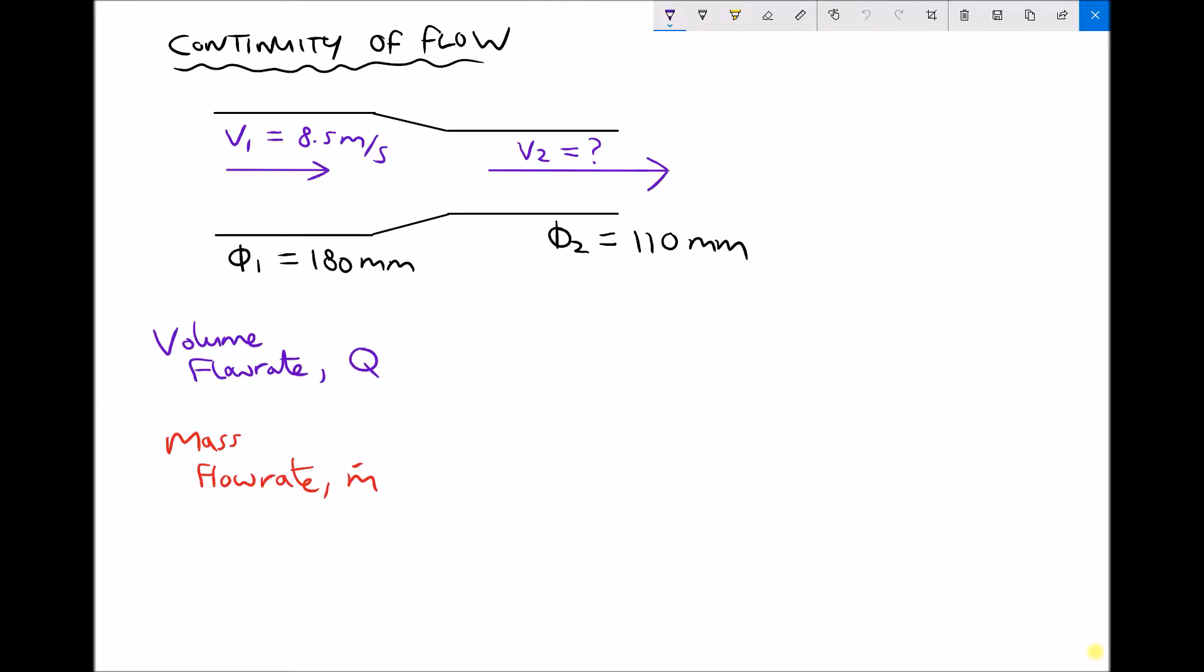In this video we're going to look at something called the continuity of flow and the continuity equation. Now what we have here is something called a converging duct. A converging duct means it gets narrower as we go along the length of the duct. The opposite of a converging duct is a diverging duct. And the equations that we're going to look at in this tutorial are applicable to both.